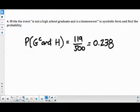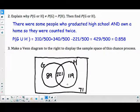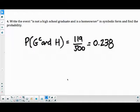So they need to be both a homeowner and not a graduate. So in the Venn diagram, they need to be in the set of homeowners but not in the set of graduates. So that's these 119. And that's 0.238 or 23.8%.